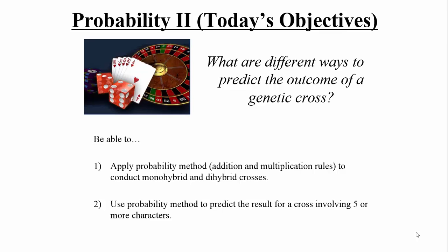Today's lecture is probability two. We're going to talk about a few advanced probability measures you can use in genetics problems. The first objective is to discuss the addition and multiplication rules, not just in the context of a monohybrid cross, but also a dihybrid cross. The second objective is using the probability method to predict results for a cross involving multiple characters — five or more.